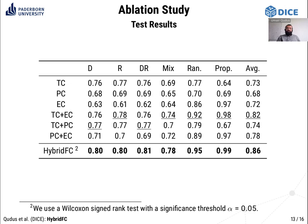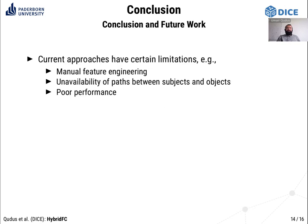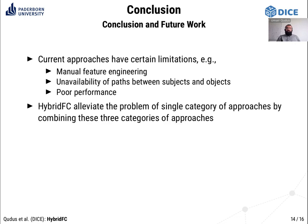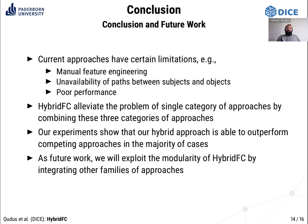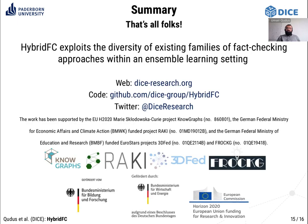In conclusion, we discussed limitations of existing families — manual feature engineering in text-based approaches, unavailability of paths in graph-based approaches, and poor performance in embedding-based approaches. We proposed Hybrid FC, which alleviates these problems by combining the three categories. Our experiments show that Hybrid FC outperforms competing approaches in the majority of cases. As future work, we will exploit the modularity of Hybrid FC by integrating other families such as rule-based approaches. In summary, Hybrid FC exploits the diversity of existing families of fact-checking approaches within an ensemble learning setting. Thank you.